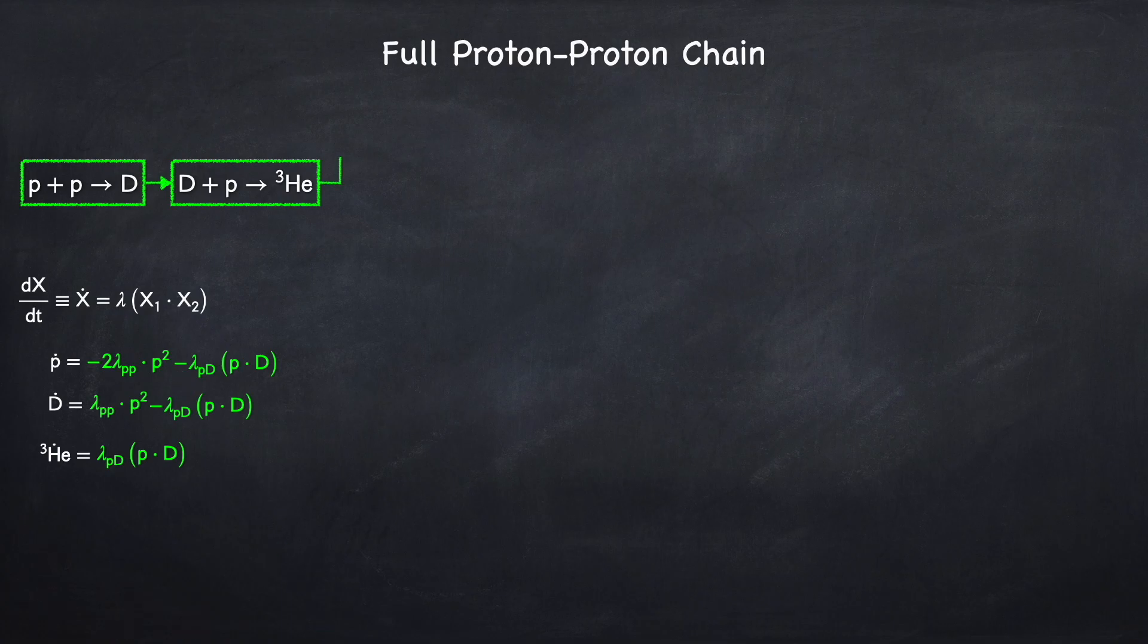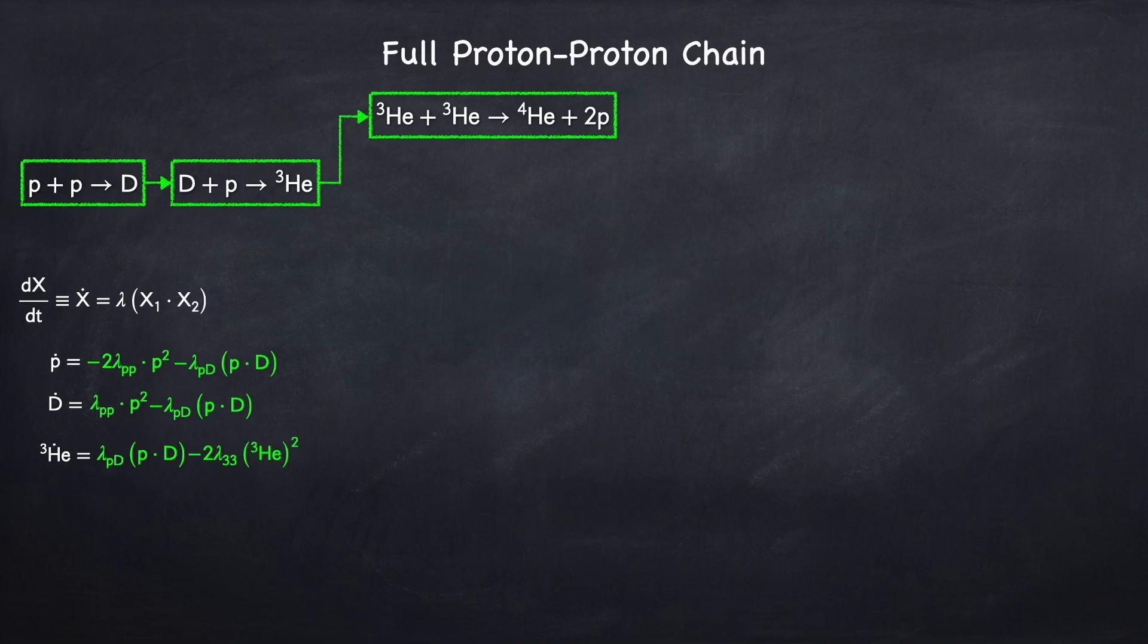Next step in the PP1 branch, the helium-3 captures another helium-3, creating a helium-4 and two protons. So, we're destroying now two helium-3 particles, at some rate, which I'm calling lambda_33. This will also create two protons, and it will create a helium-4 nucleus. And that covers the PP1 branch.